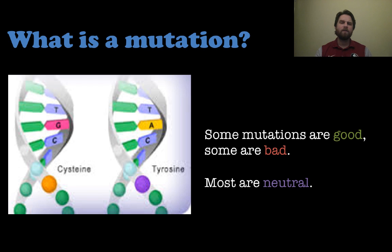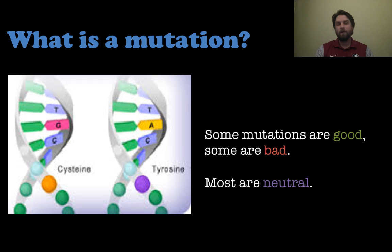Some mutations are actually very good for the organism — they could give them an advantage over other organisms they're competing with. And some mutations can be very bad, causing early death or really bad diseases. But most mutations, the vast majority of them, are actually neutral; you wouldn't even know they occurred because nothing happened because of them.